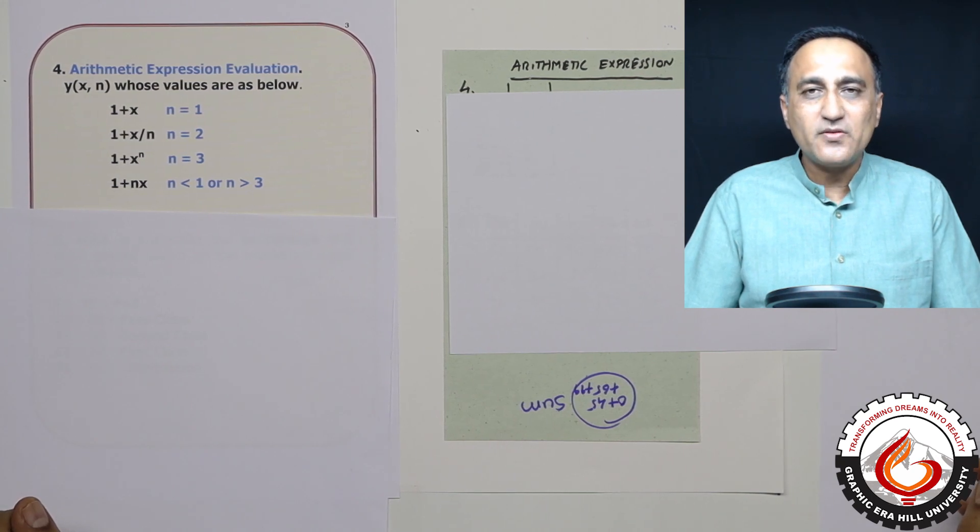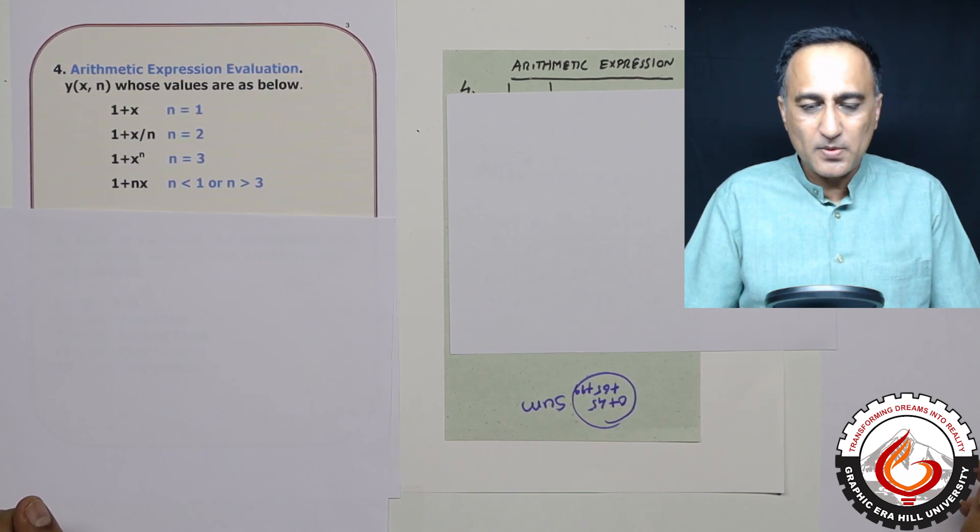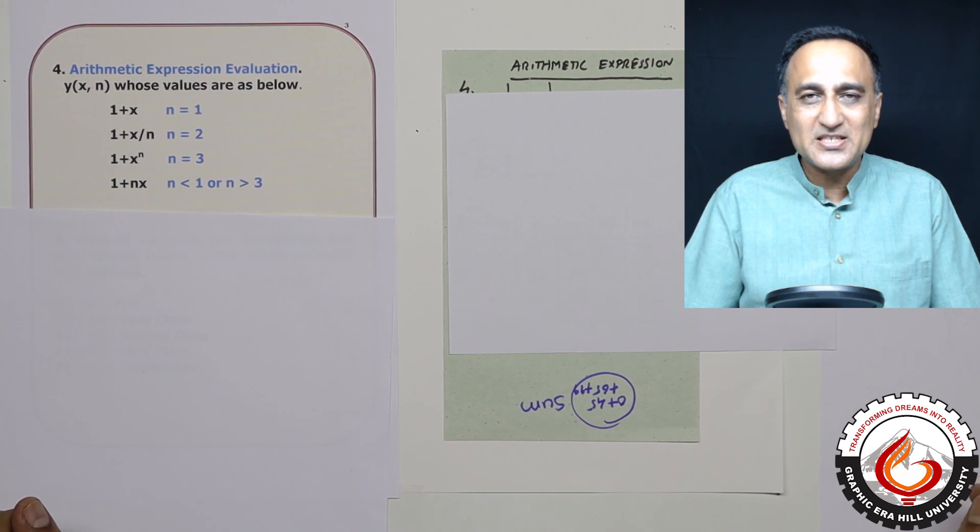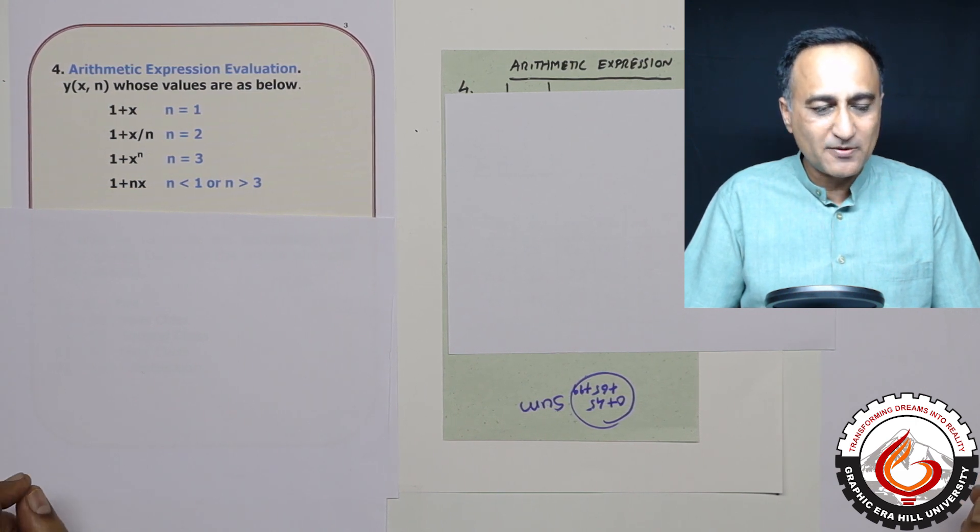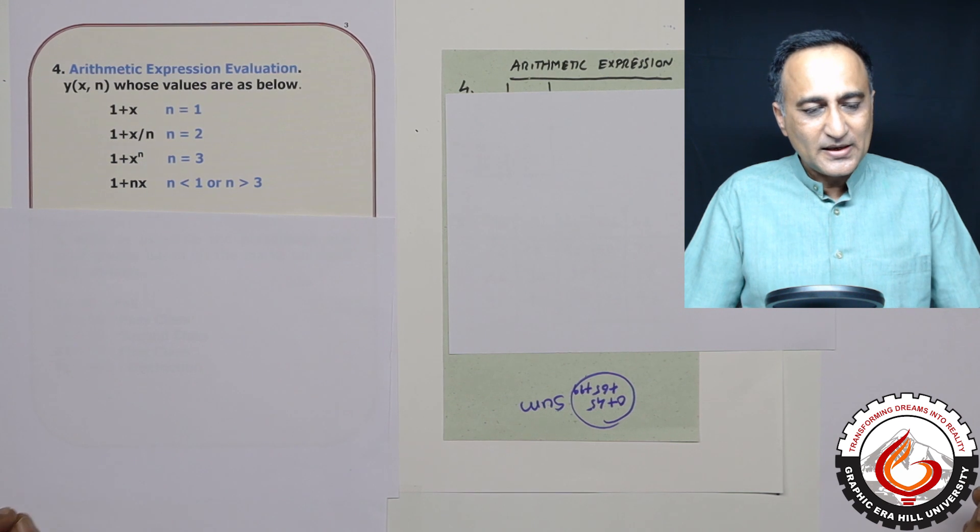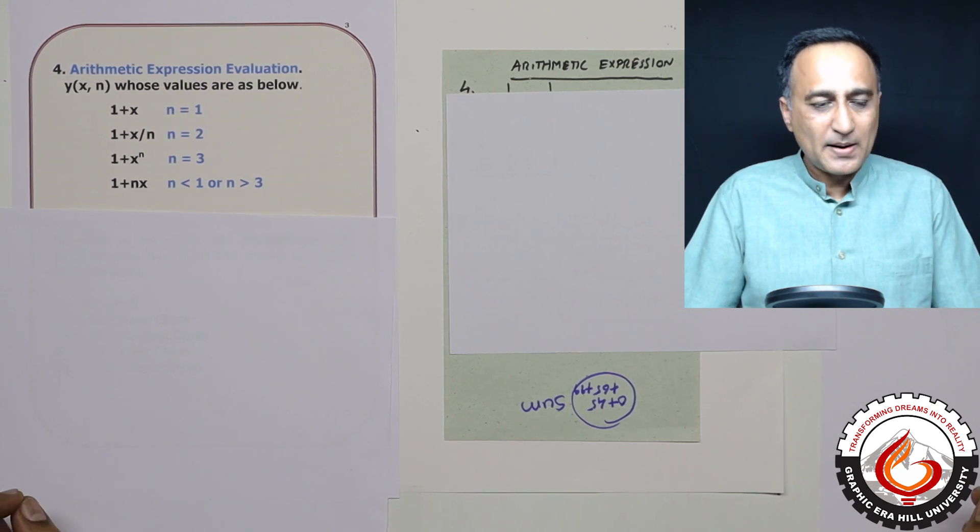In this assignment, I shall be giving you two problems. The problem sequence number for decision making statements is problem number four and five. In the first problem, I am going to talk about an arithmetic expression evaluation.